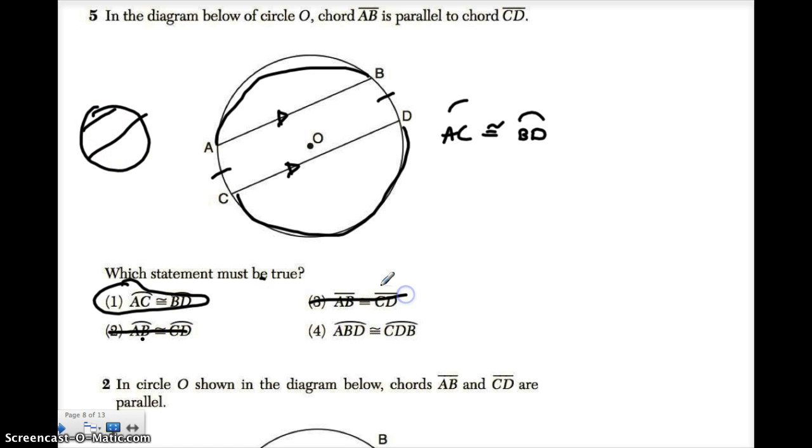So we could take this guy out. And this one says arc ABD, that's this whole thing over here, is congruent to CBD, which would be CDB. And once again, that is not a proven fact, so we can cancel that one out.